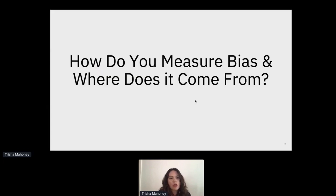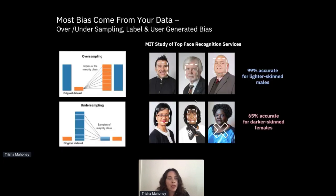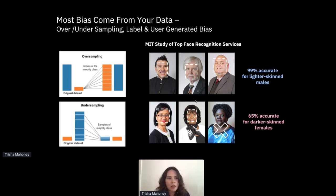I'll go into how you measure bias and where it comes from. A lot of people think bias comes from your algorithm, but the underlying data is most often the source of the bias, not the algorithm itself. This can occur due to over- or undersampling, label bias, or user-generated bias. Models are trained on data from our past human decisions, often over many decades, so this can be reflected as societal or historical inequities.